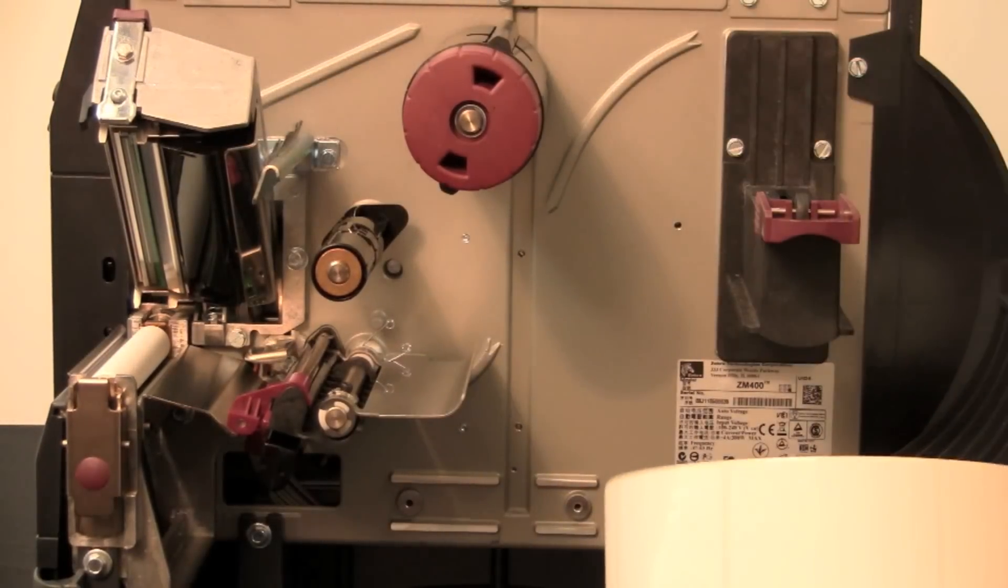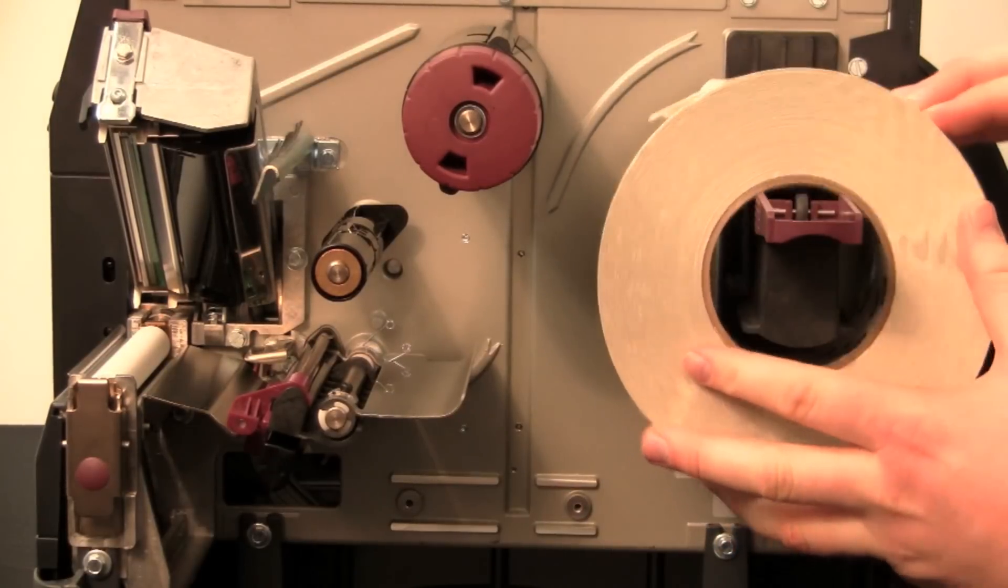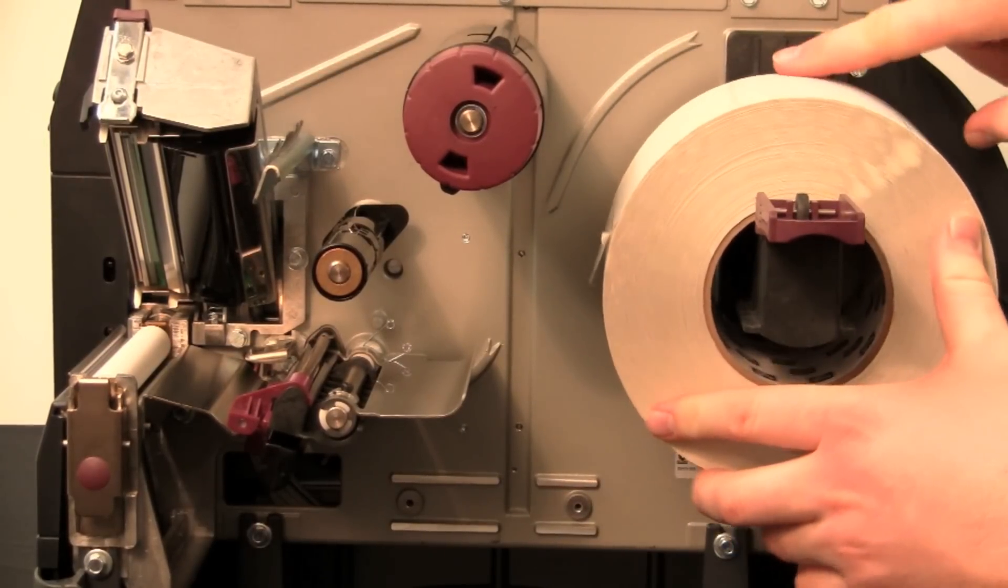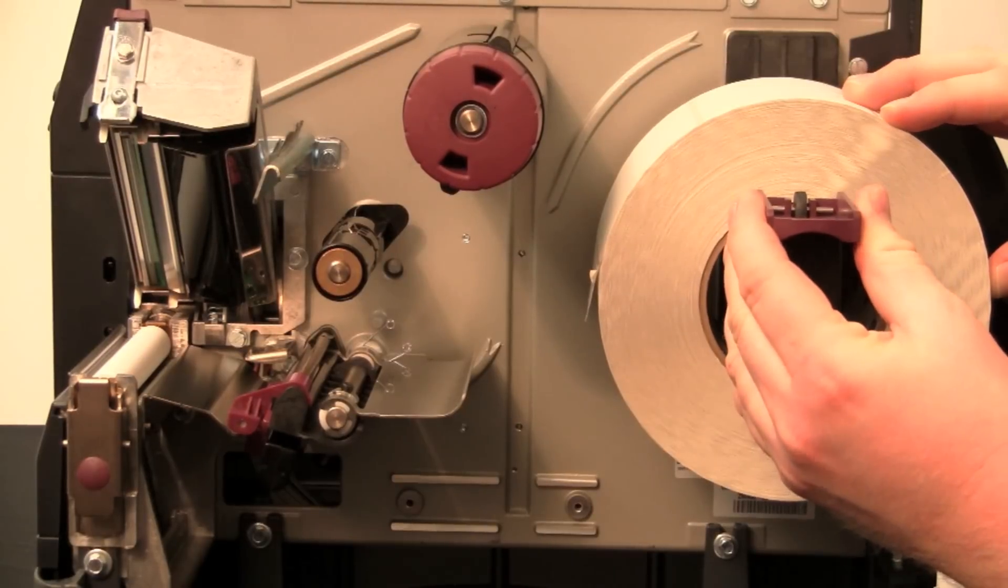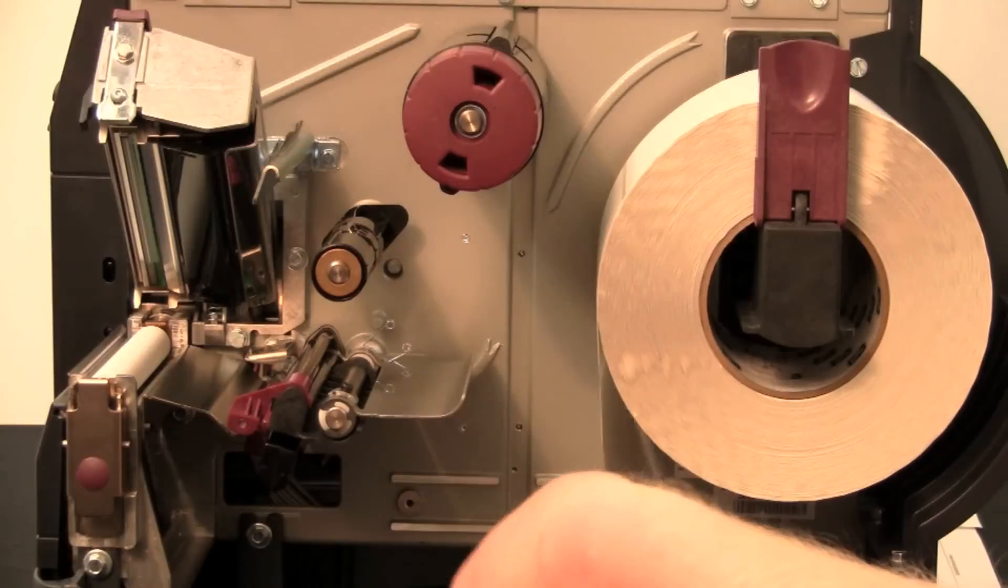Flip down the media supply guide, place the roll of media on the media supply hanger and push the roll as far back as it will go. Flip up the media supply guide and slide it in until it touches the edge of the roll.